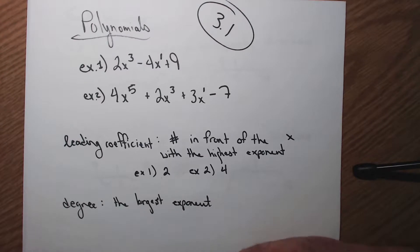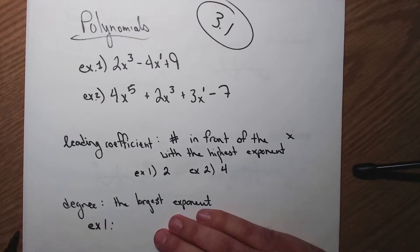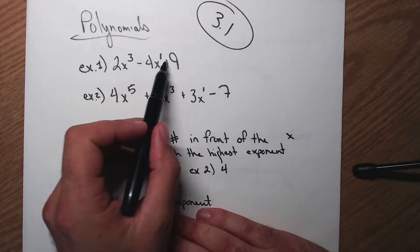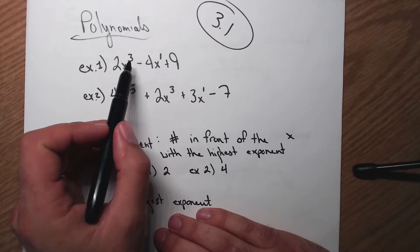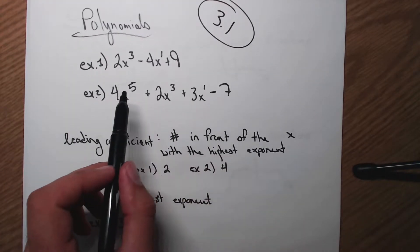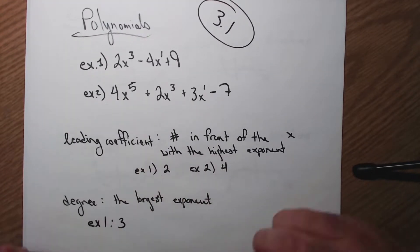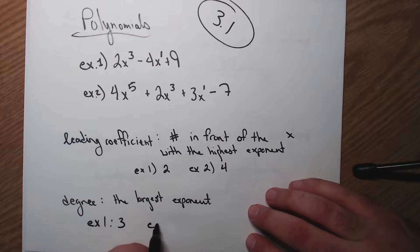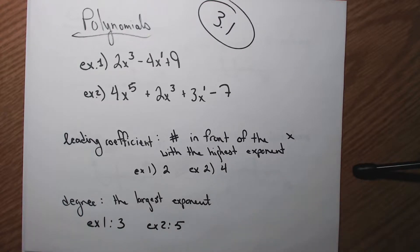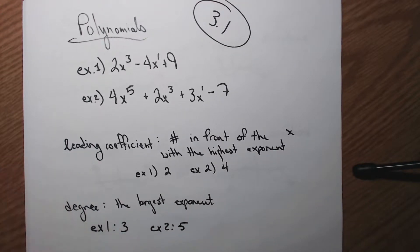The degree is the largest exponent. For example 1, my largest exponent is 3. For example 2, the highest degree is 5 — so 5 is my degree.